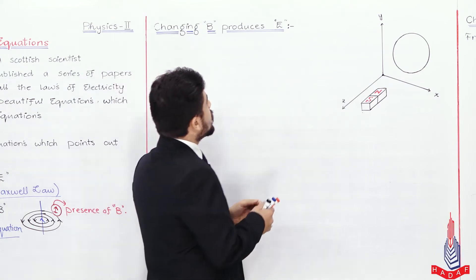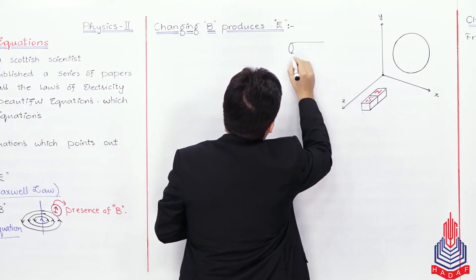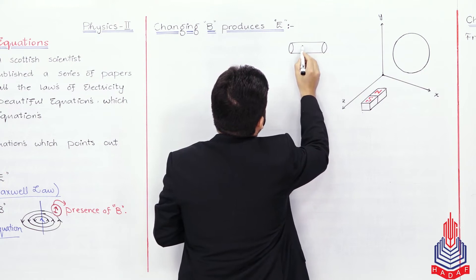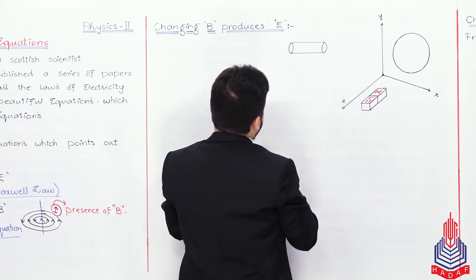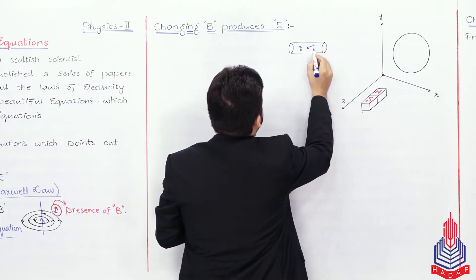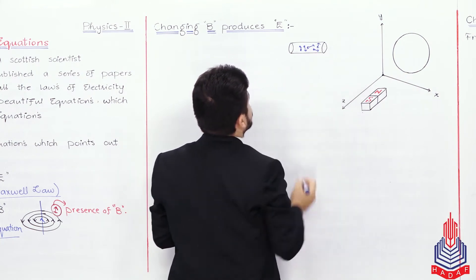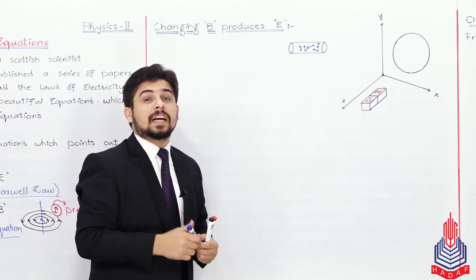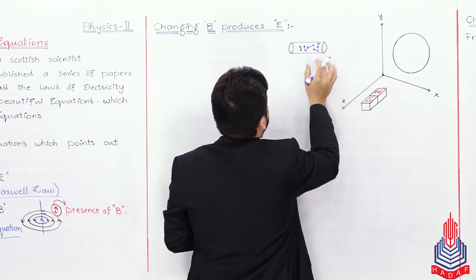Now dear students, you know that if we have a wire — let us say this is a cross-section of a wire — inside this wire you have free charges, and those free charges are moving randomly. Some particles move this way, some that way. So there is a random motion of particles, but there is no net flow. So when there is no net flow, there is no net current — the current value here is zero.